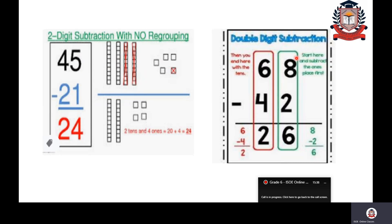Always start subtracting from ones place — that is the first rule. The second rule: when you are subtracting, your minuend should be greater than your subtrahend. Only then can you subtract the numbers; otherwise you cannot do the subtraction.